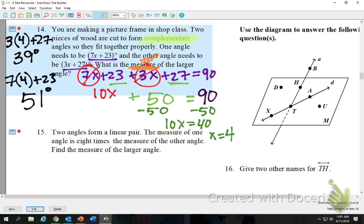So some people circled this and they were done. So they did not answer the question. Because the other angle, if you plugged in 4, 7 times 4 plus 23. 7 times 4 is 28. Plus 23 is 51. So which one of these is larger? The 51 degree angle. So if you got this wrong on the quiz, this is the same exact question. Literally didn't change the numbers.